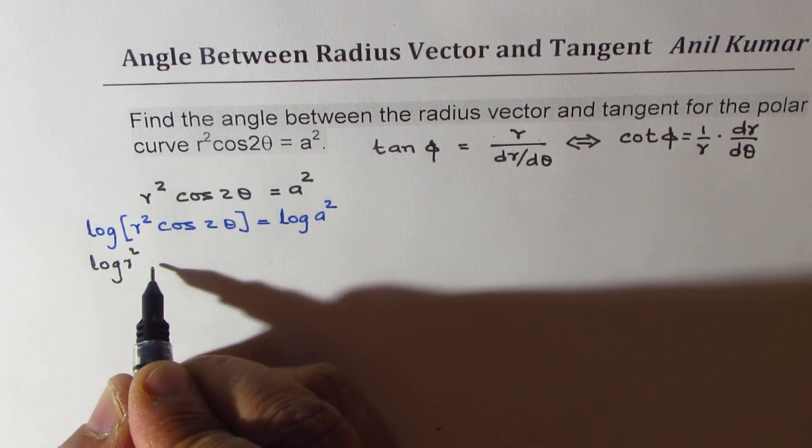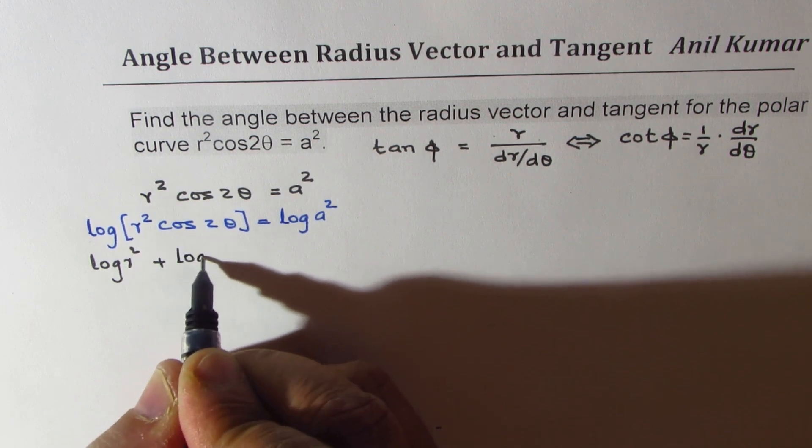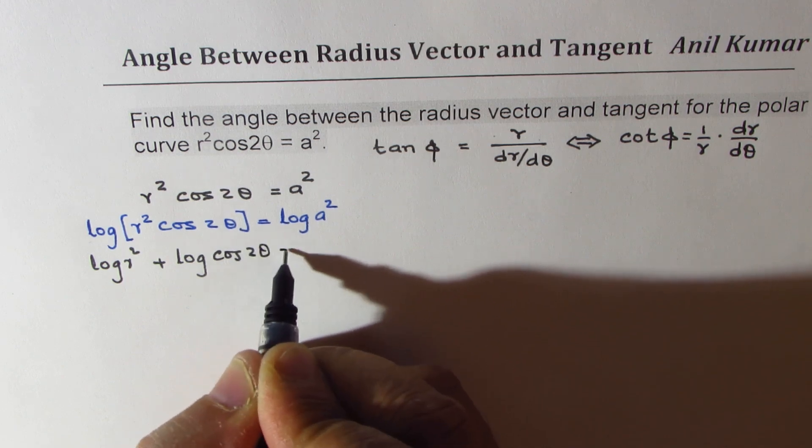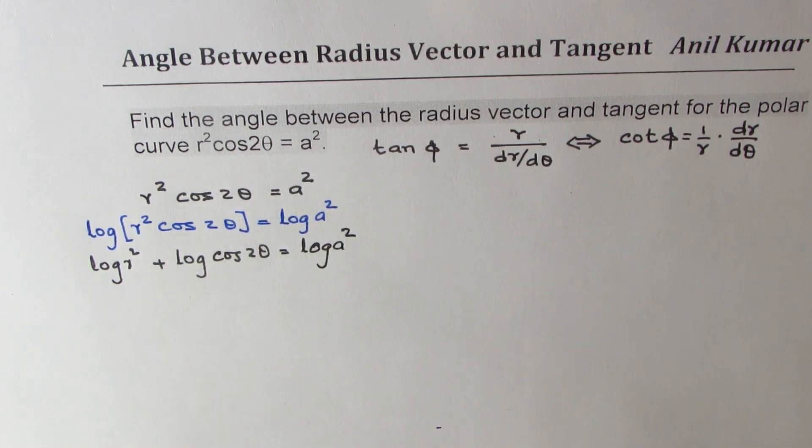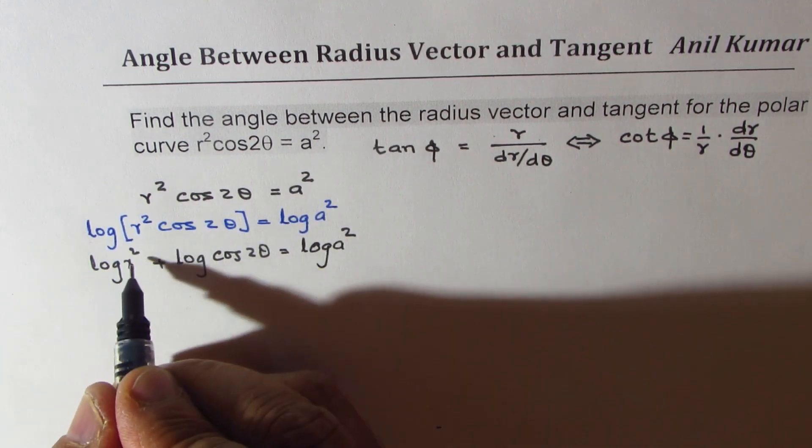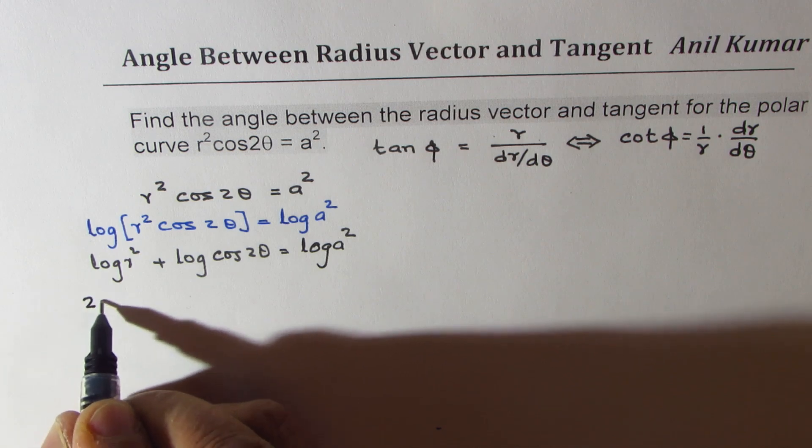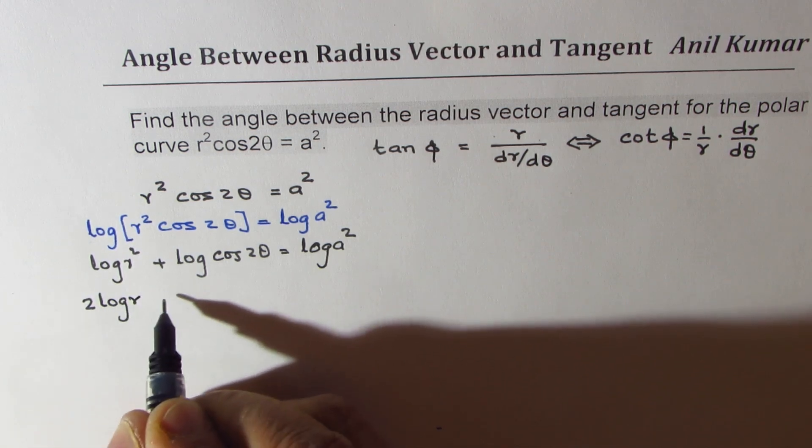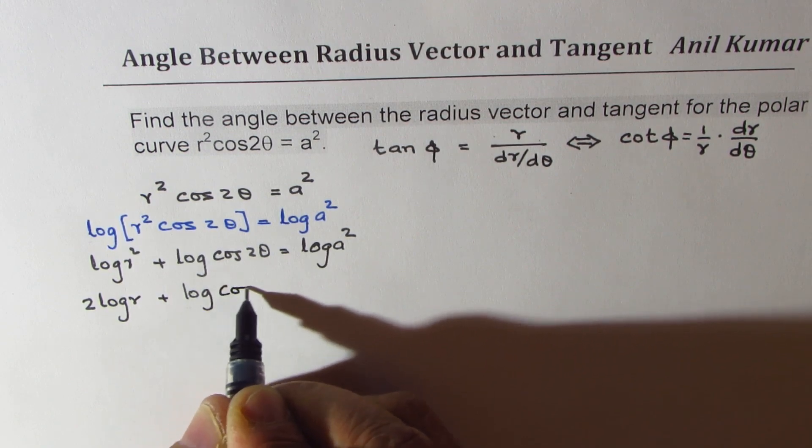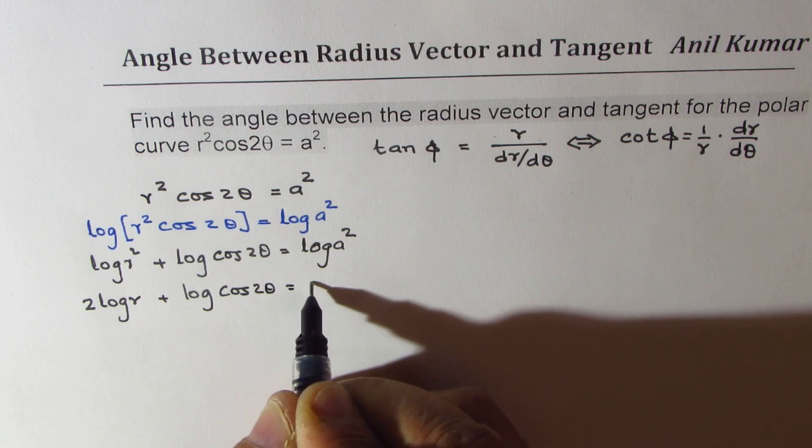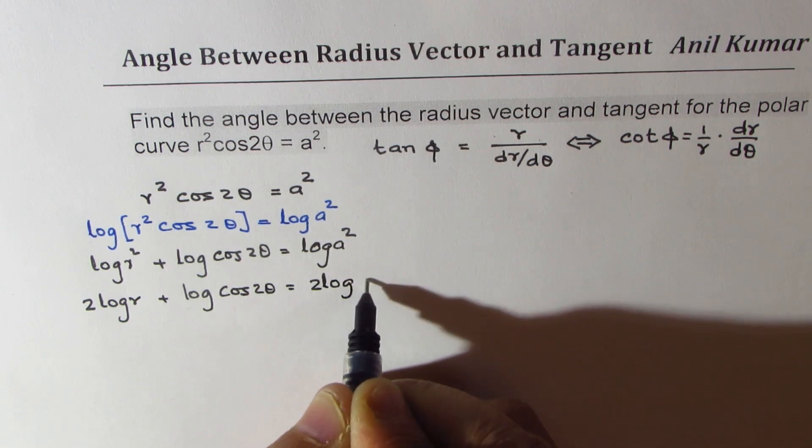This is a product we could write this as plus log of cos 2θ equals log a². Applying the power rule: 2 log r plus log cos 2θ equals 2 log a.